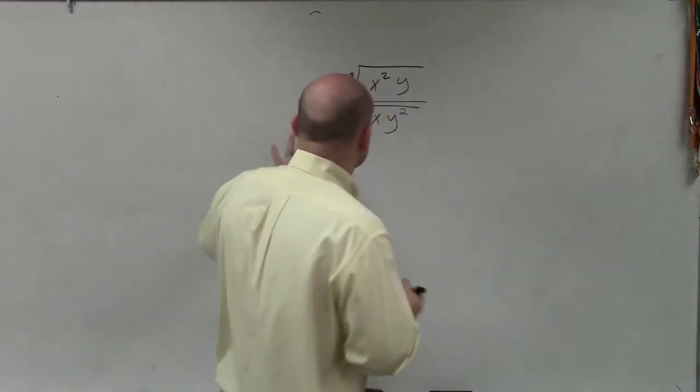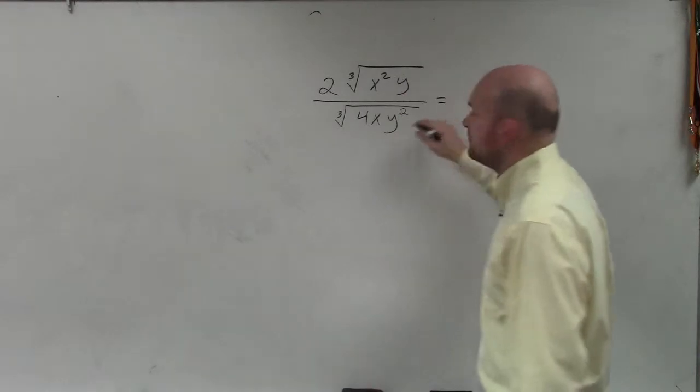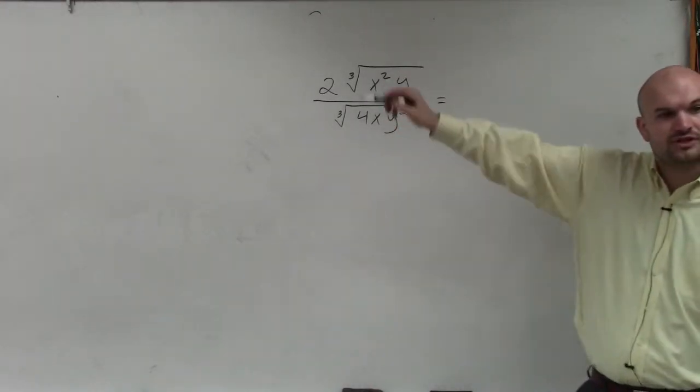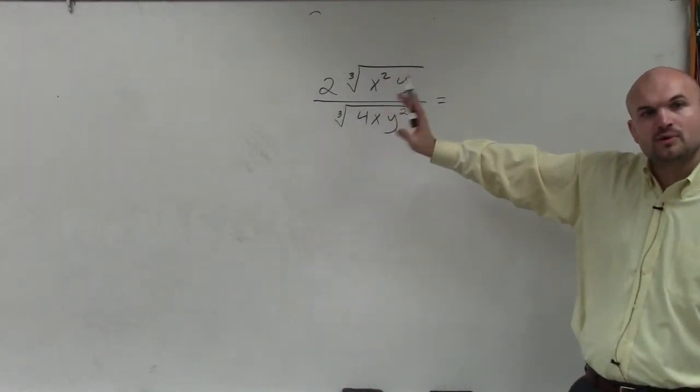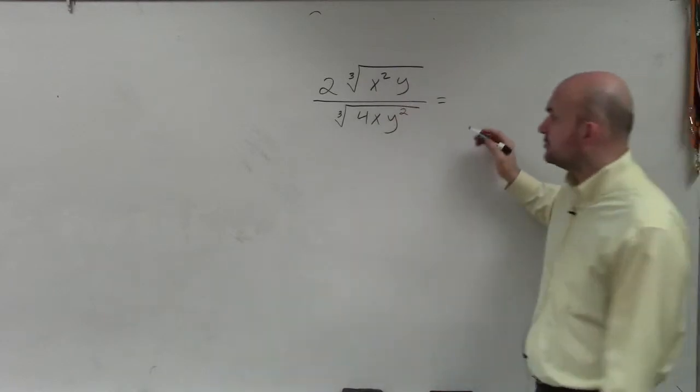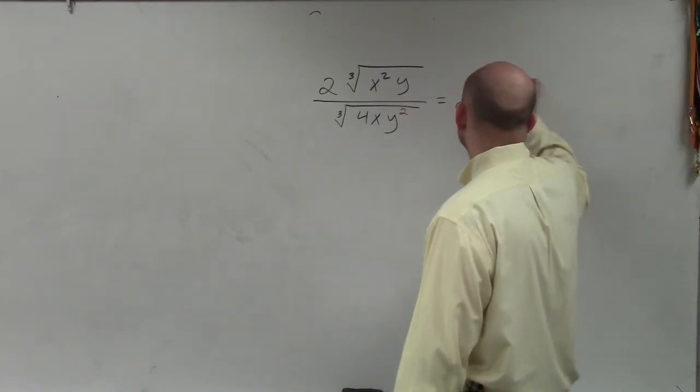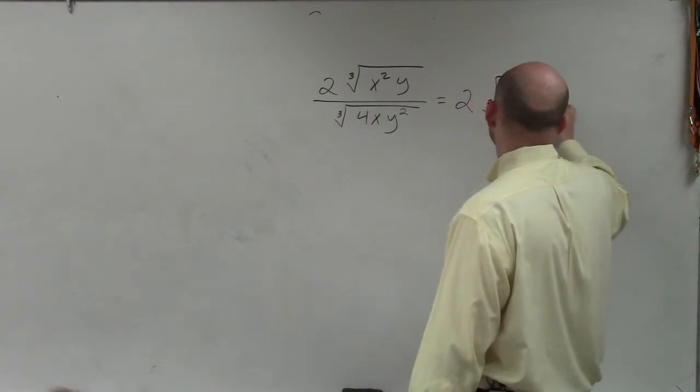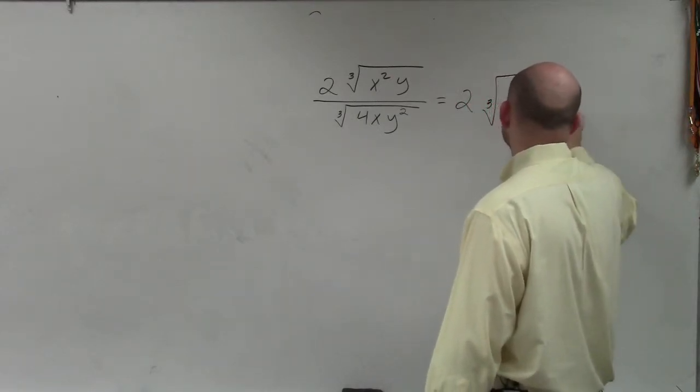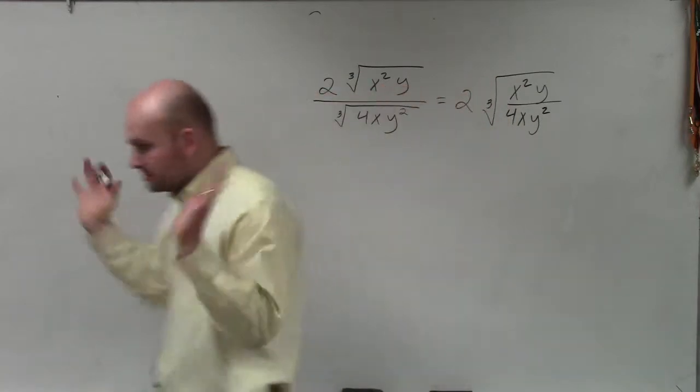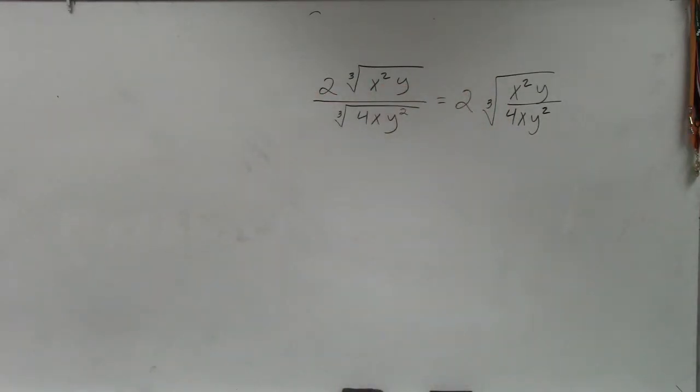The first thing you want to do to rewrite this—remember, when we're taking the quotient of two radical expressions, we can rewrite them under the same radical expression. So basically, this can be written as 2 cubed root of x squared y over 4xy squared. That's what I wrote down in my notes. You didn't do any math, you just rewrote it based on the notes that we provided.